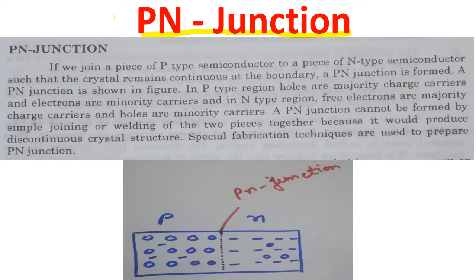Before this, we have studied about P-type and N-type materials. When we dope a pure semiconductor with pentavalent impurity, we get N-type material, and when we dope a pure semiconductor with trivalent impurity, we get P-type.